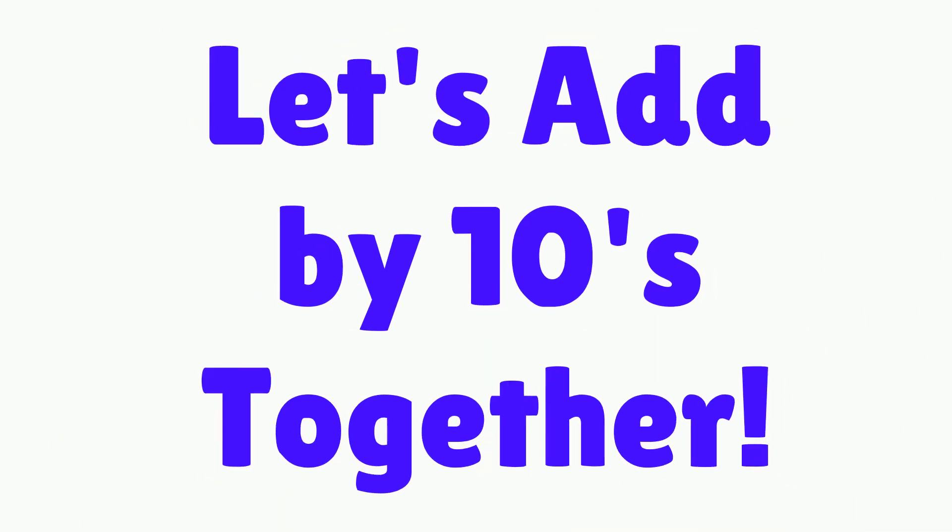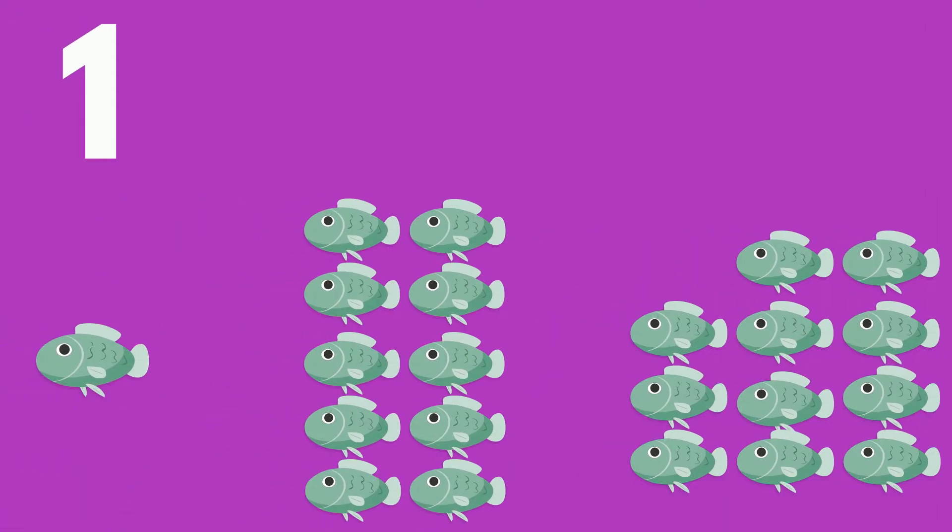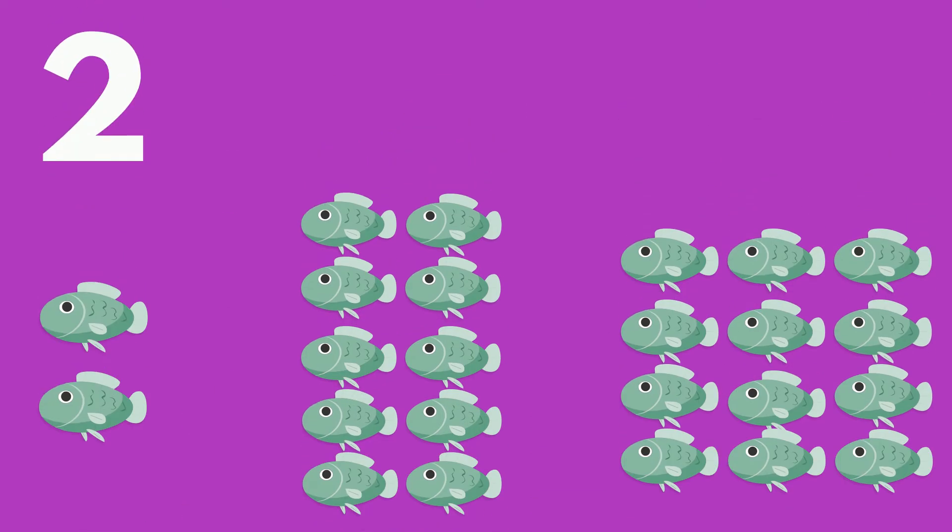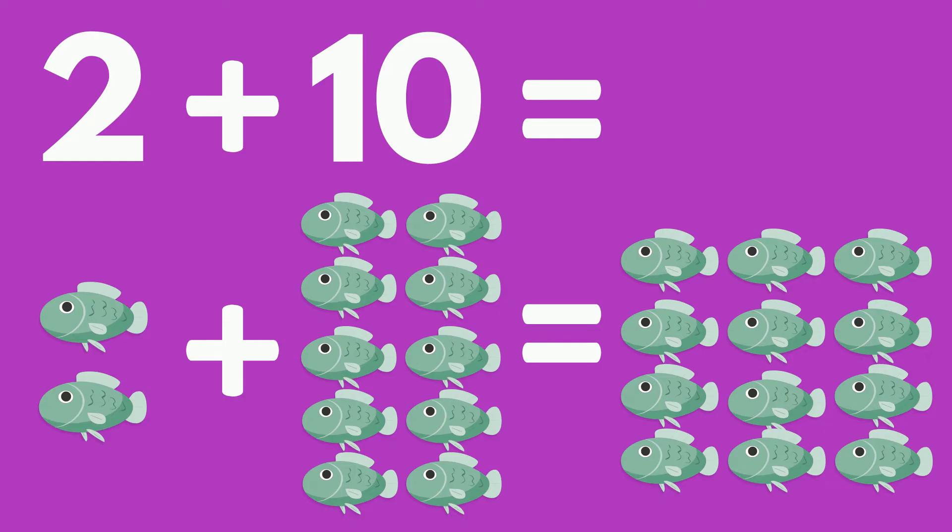Let's add by tens together. 1 fish plus 10 fish equals 11 fish. 2 fish plus 10 fish equals 12 fish.